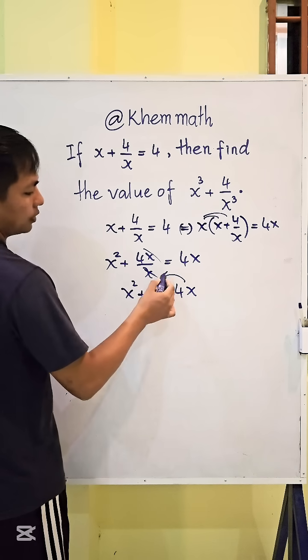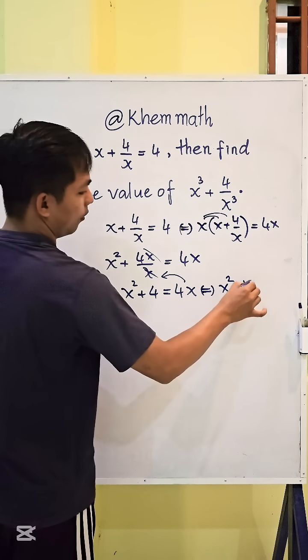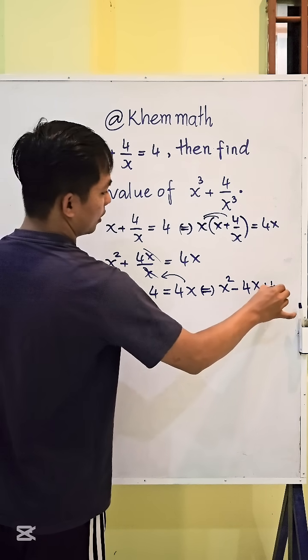And we change 4x to the left-hand side. We get x squared minus 4x plus 4 equals 0.